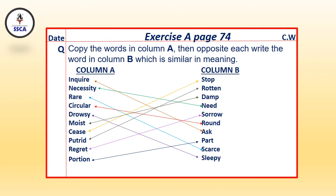Column A words: inquire, necessity, rare, circular, drowsy, moist, seize, portrait, regret, portion. Column B words: stop, rotten, damp, need, sorrow, round, ask, part, scarce, and sleepy. Students, if you want to use colorful pencils to match these columns, you can use them.